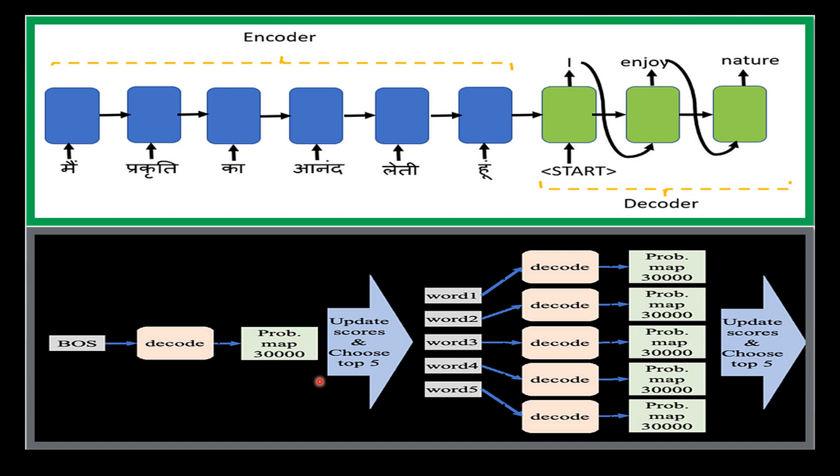At the next step, the algorithm considers the most likely next words for each of these three sequences and repeats the process. This way, beam search considers multiple candidate sequences simultaneously, ensuring that the most likely combination of words is selected at each step.